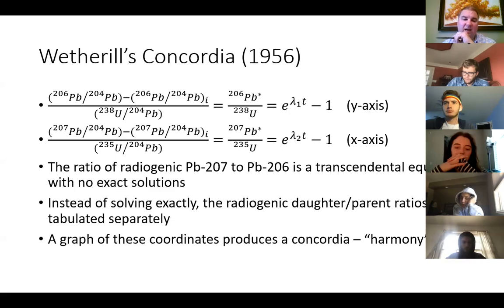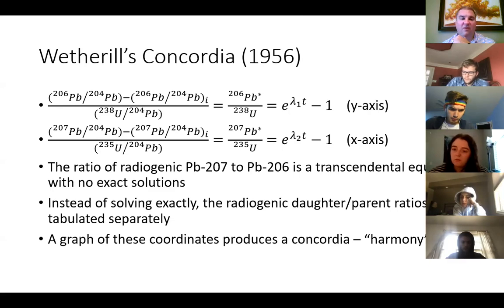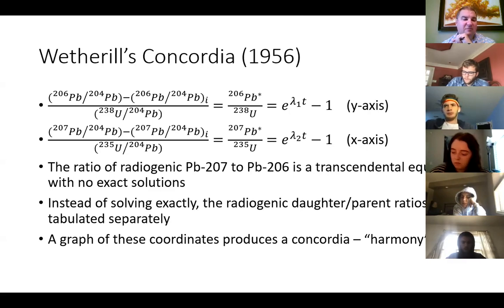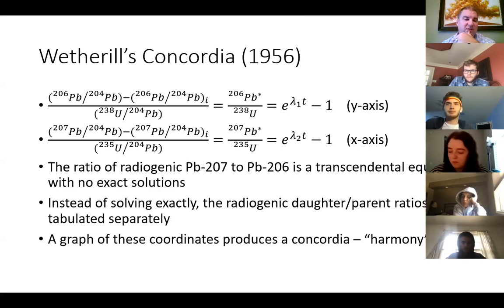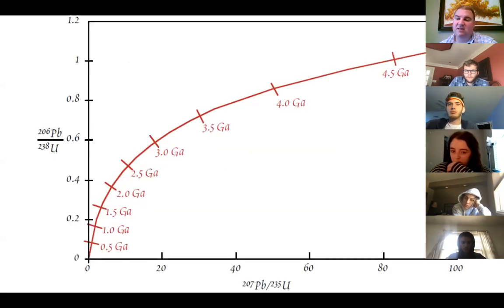Concordia diagrams are really what we apply these equations with. We can use isochrons, but what about much older stuff or smaller numbers of samples? This is what was developed for moon rocks. Concordia literally means harmony. Instead of plotting daughter versus parent, if you reverse these ratios and plot lead-206 versus uranium-238 and lead-207 versus uranium-235, you can create these curved plots — and that curve is known as the Concordia.